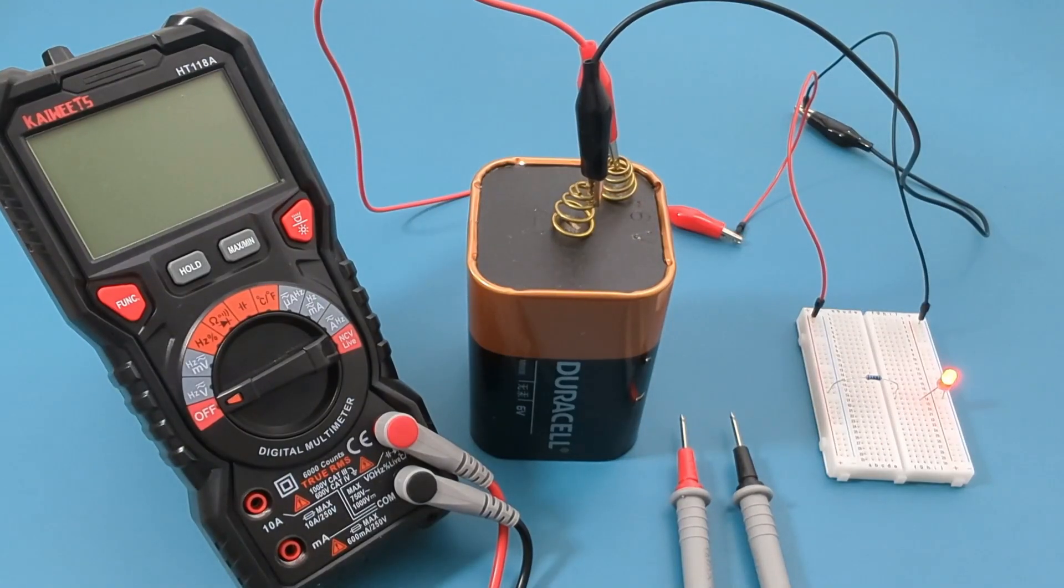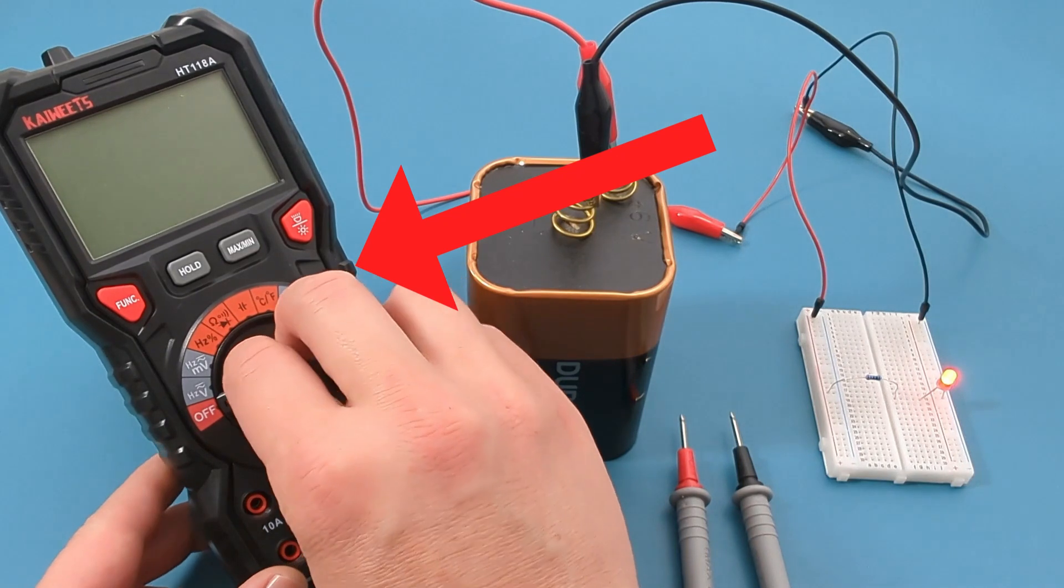Let's do a quick demonstration. I have a 6-volt battery attached to a red LED and a resistor. Using this multimeter, I can measure the voltage across the terminals. Turn the multimeter to the voltage setting.